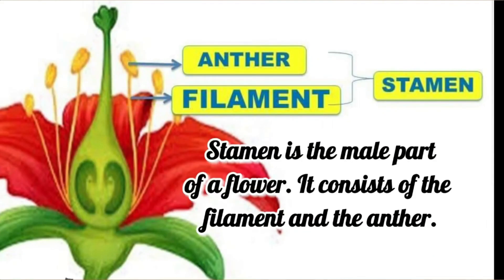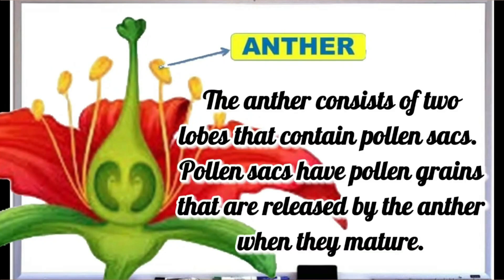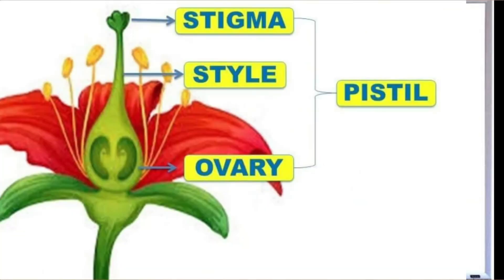Stamen is the male part of a flower. It consists of the filament and the anther. The filament holds the anther in a position tall enough to release the pollen. The anther consists of two lobes that contain pollen sacs. Pollen sacs have pollen grains that are released by the anther when they mature.